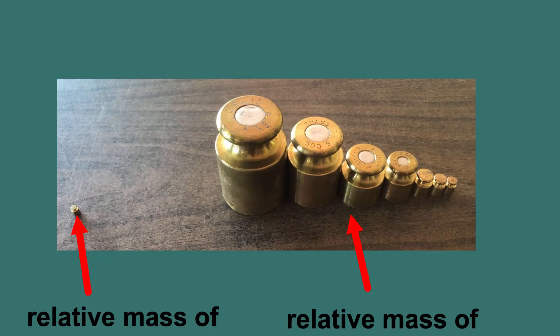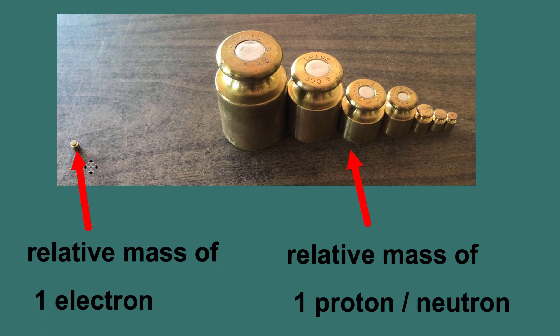Now if we were to put them side by side for a better visual, so we're saying that the electron has a relative mass of one gram, then over on the right hand side, all of these masses combined together would give the equivalent mass of the proton or the neutron.